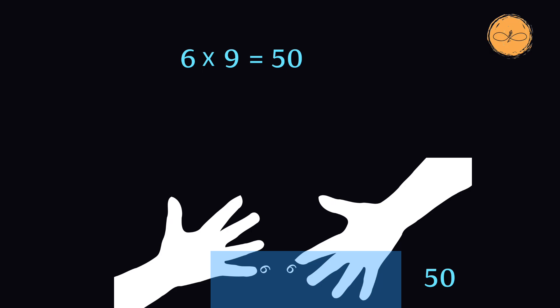Now we have 4 fingers above the fingers that are touching on the left hand and one finger on the right hand, so we multiply these and we have 4. We add those two numbers, 50 and 4, to get our answer of 54.